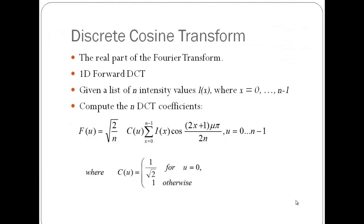Before getting into the details of image compression, I will first talk about DCT — the Discrete Cosine Transform — which is the backbone of this lecture. DCT is actually the real part of the Fourier transform, which we covered in a previous lecture. As you may recall, the Fourier transform represents an image as a sum of sinusoids of various magnitudes and frequencies, with cosine terms and sine terms. The sine terms are the imaginary part, and the cosine terms are what we are discussing here.